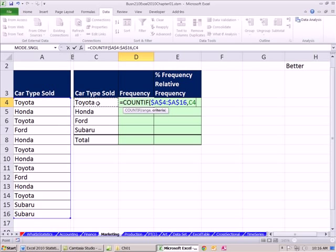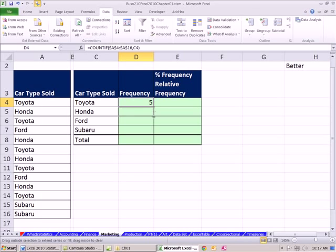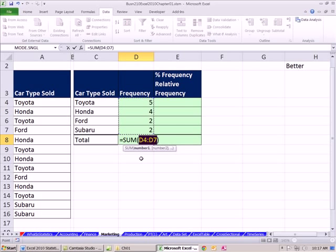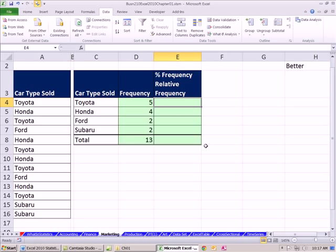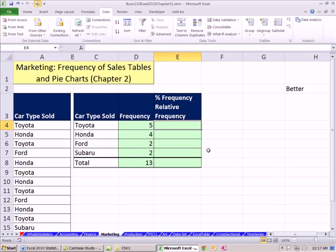I'm going to click there and Control Shift Down Arrow, F4 to lock it, because we're going to copy it down, comma, and our criteria is the Toyota. So right now, it's simply saying go through there and count all the Toyotas. If I enter this with Control Enter and copy it down, I can see there's five Toyotas, four Hondas.